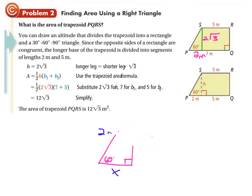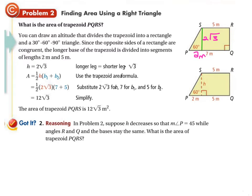Let me get this out of the way and give you your got-it problem. Sometimes it helps to draw a sketch, particularly when you're doing 30-60-90 triangles. But this is related but not exactly the same. The problem: suppose the height decreases so that the angle changes and MP becomes 45 degrees, while angles R and Q still stay the same — meaning they're both 90 degrees still, so we know we've got parallel lines. The bases are 5 and 7. What is the area of the trapezoid? Sketch this out, figure it out, come right back and watch my explanation after you try it. Pause the video now to solve this problem.